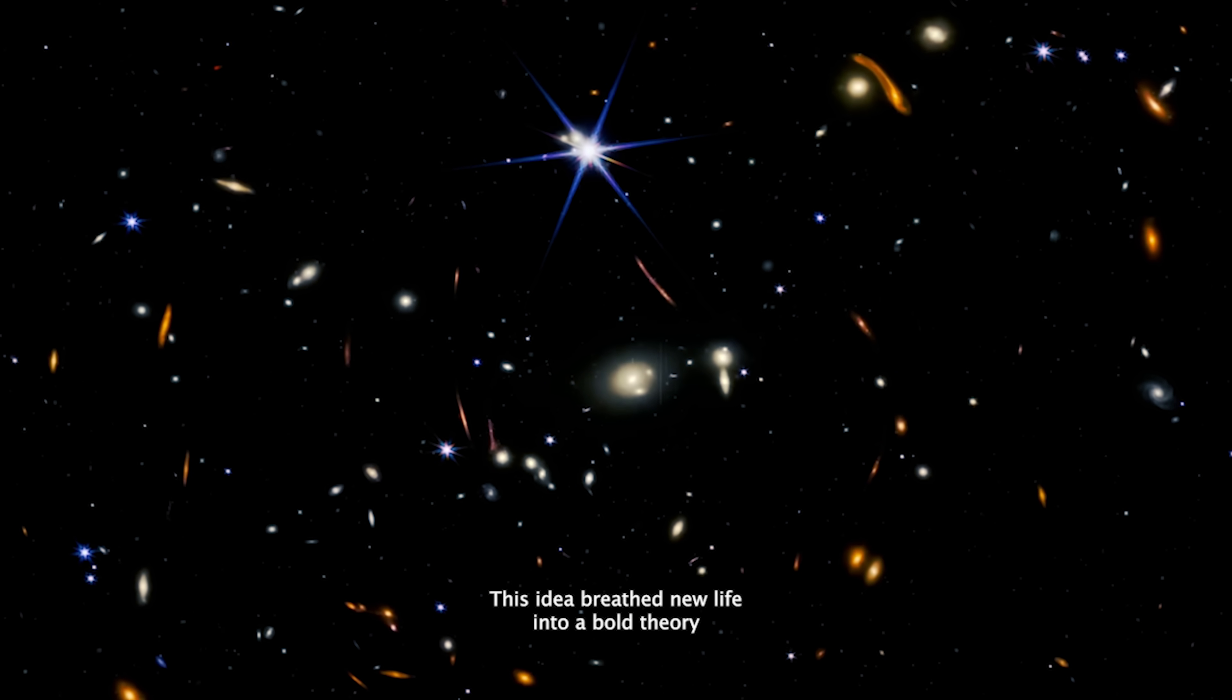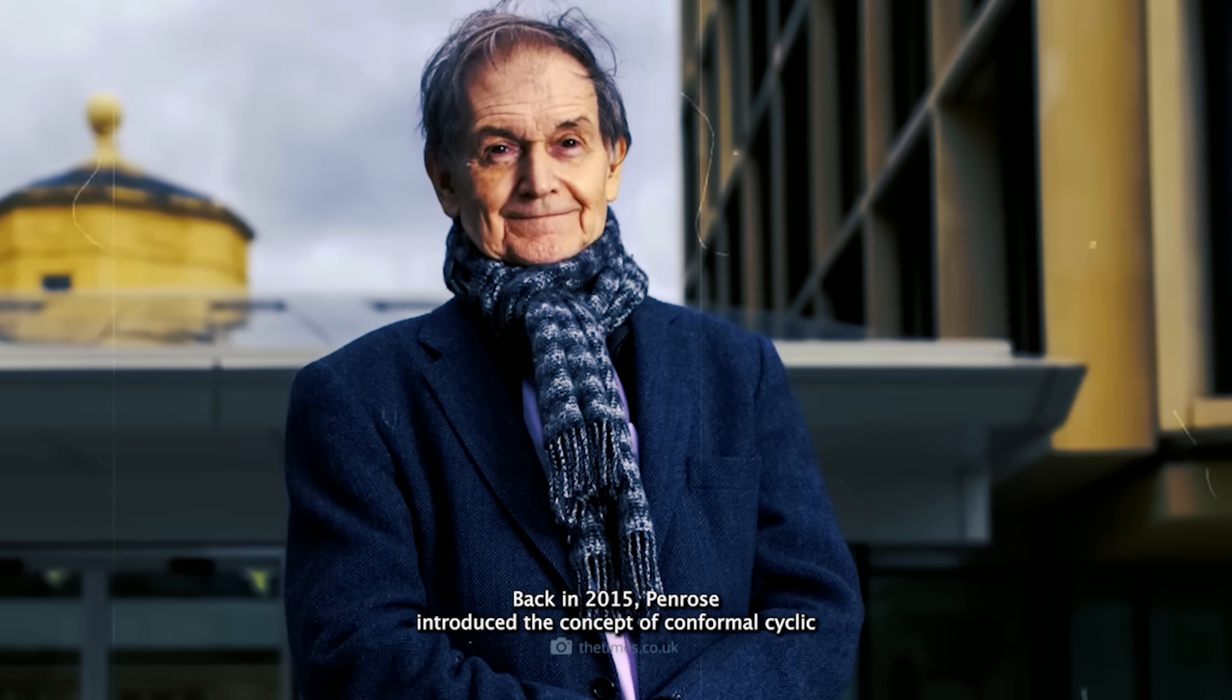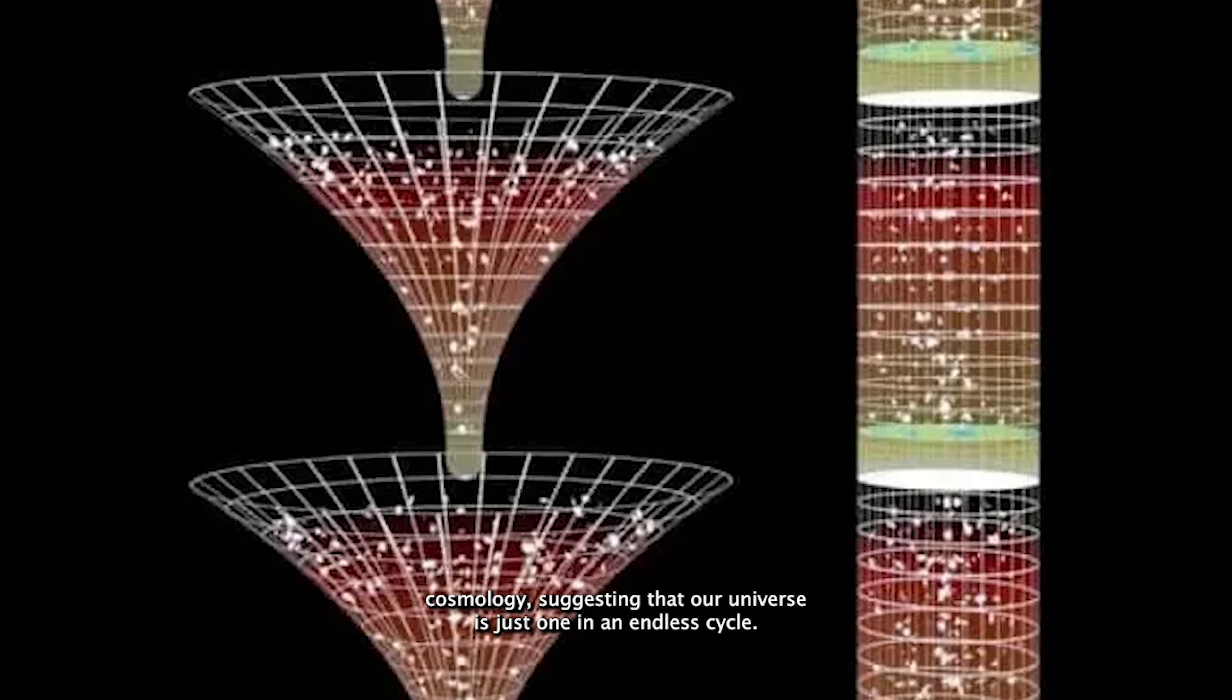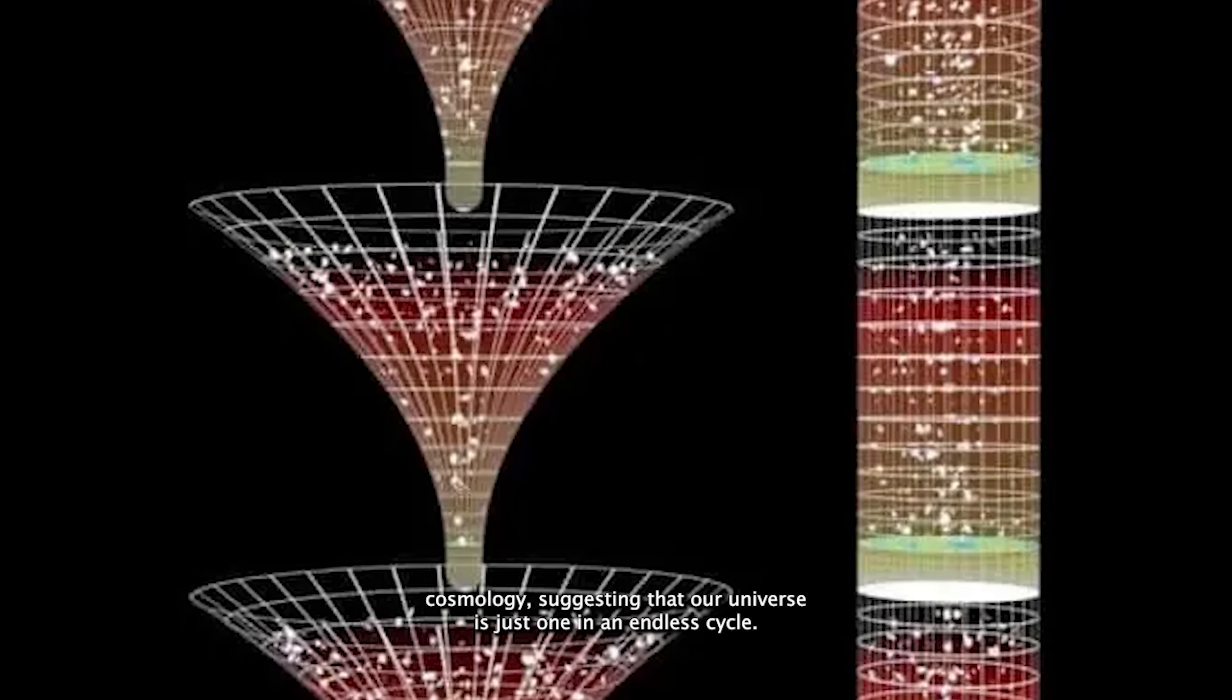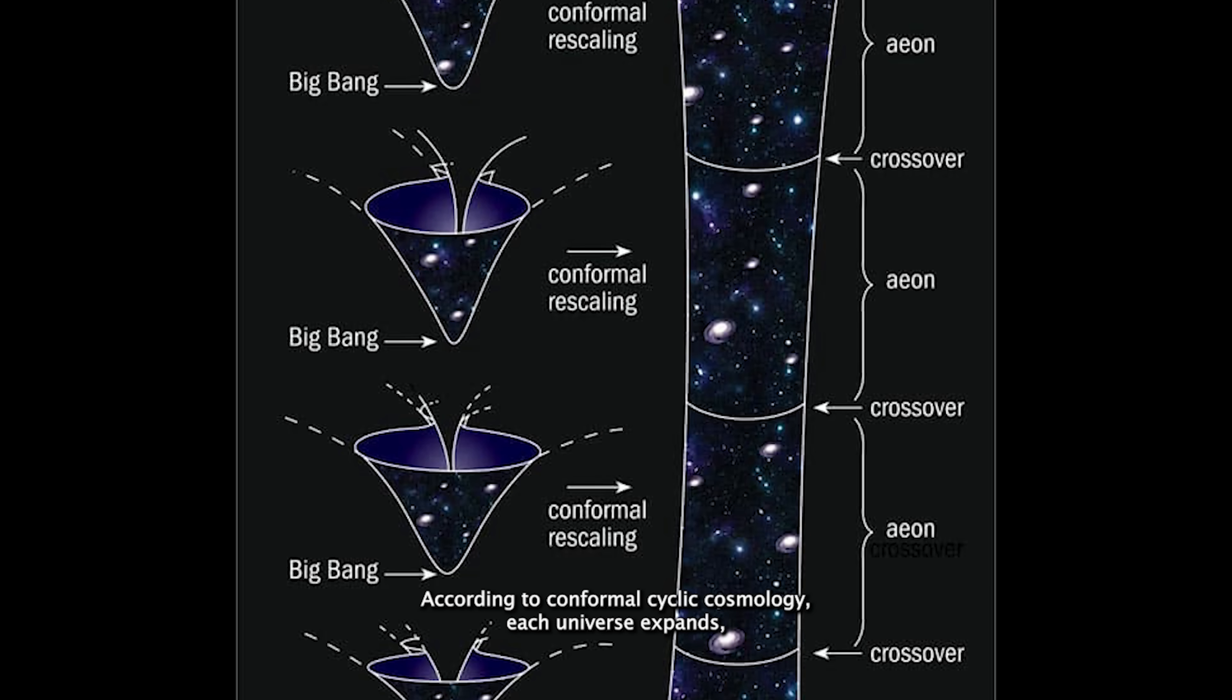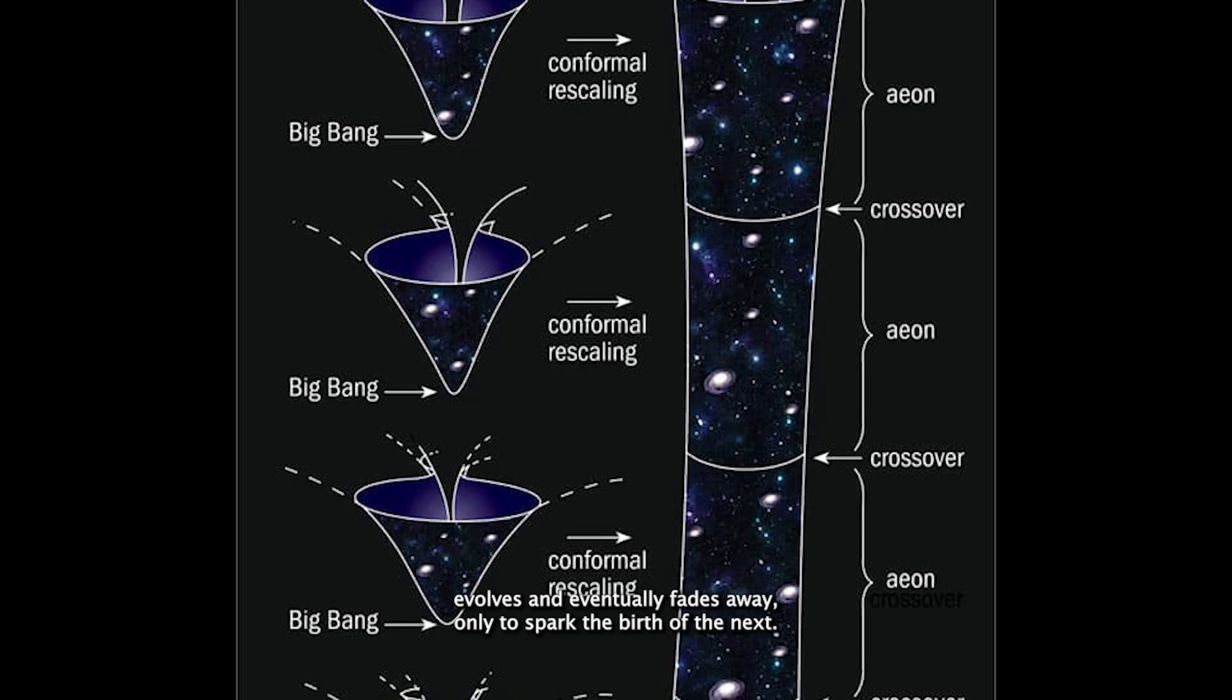This idea breathes new life into a bold theory proposed by British physicist Sir Roger Penrose. Back in 2015, Penrose introduced the concept of conformal cyclic cosmology, suggesting that our universe is just one in an endless cycle. According to conformal cyclic cosmology, each universe expands, evolves, and eventually fades away, only to spark the birth of the next.